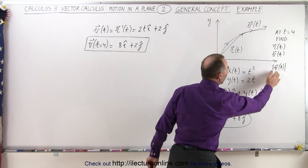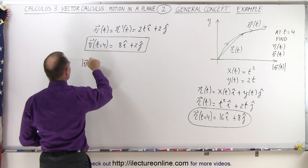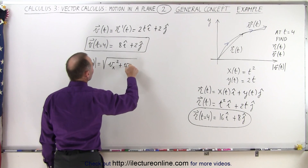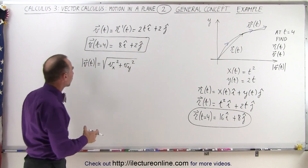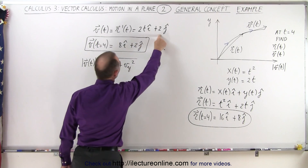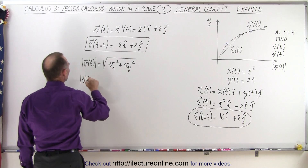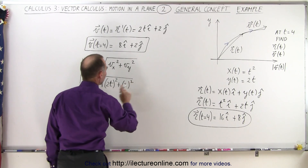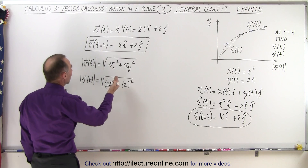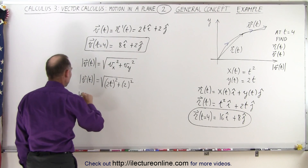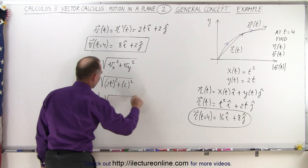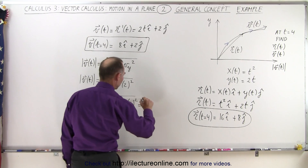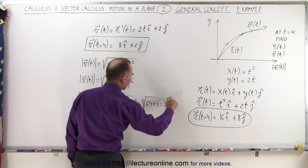Now we want to find the magnitude of the velocity, which is the speed. The magnitude of the velocity vector equals the square root of the x component squared plus the y component squared. In general form, that's the square root of (2t) squared plus (2) squared. When t equals 4, that becomes the square root of (2 times 4) squared plus 2 squared, which is 8 squared plus 4, equaling 64 plus 4, or the square root of 68.